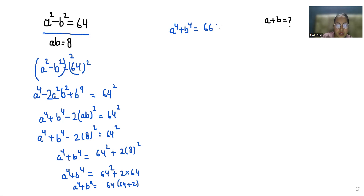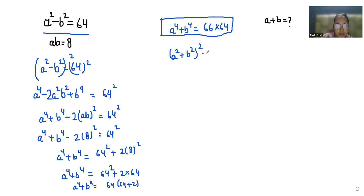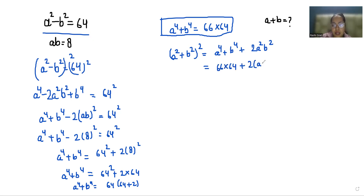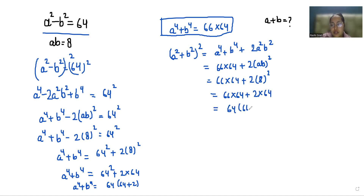Now I'm using the identity (a squared plus b squared) whole square equals a power 4 plus b power 4 plus 2a squared b squared. We have a power 4 plus b power 4 as 66 times 64, plus 2 times (ab) squared, which is 2 times 8 squared, that is 2 times 64. Taking 64 as common gives 64 times 68.